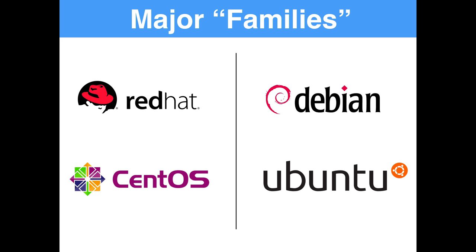Red Hat is really enterprise-focused. It's got a subscription tier — people pay for it, corporations typically pay for it. If a corporation doesn't want to pay for Red Hat but wants that ecosystem, which tends to be a little bit more stable and security focused, they typically will use CentOS. CentOS is open source and totally free, whereas Red Hat typically comes with some kind of subscription or paid services.